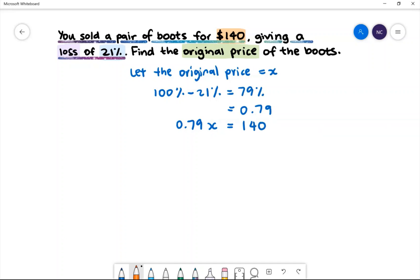We want to get x by itself. To do that, we need to move 0.79 away by dividing both sides by 0.79. Therefore, we'll have x equals $140 divided by 0.79.